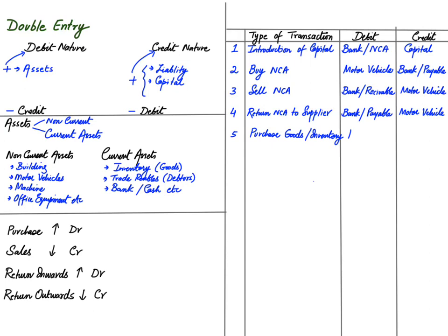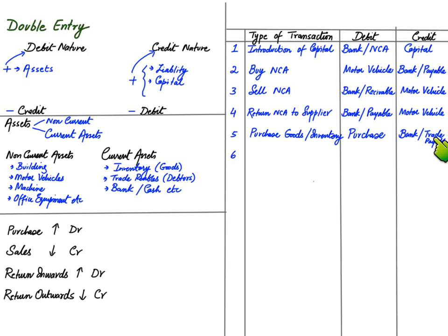Whenever we are buying goods for business, we debit the purchase account. There can be two things: first, we have paid for the inventory just bought, so we credit the bank account — because bank is an asset and whenever an asset goes down we credit it. There is another scenario where we haven't yet paid for the goods we bought, and we will be crediting a trade payable. Trade payable is a liability — the amount we owe to our suppliers. If we know the name of the business, such as XYZ company, we credit XYZ company; otherwise we write trade payable.